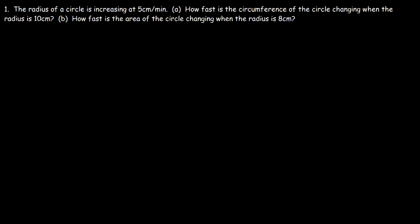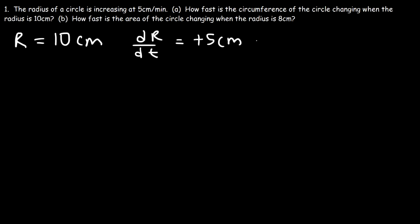Let's start with this one. The radius of a circle is increasing at 5 centimeters per minute. How fast is the circumference of the circle changing when the radius is 10? Let's write down what we know. The radius r is equal to 10 centimeters, and dr/dt, the rate at which the radius is changing, is positive 5 centimeters per minute — positive because the radius is increasing. Our goal in part a is to find dc/dt, the rate at which the circumference is changing.